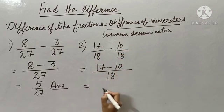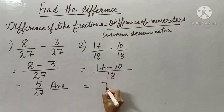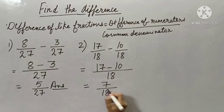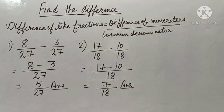Now 17 minus 10, 7 upon 18 is my answer. It is very easy beta to find the difference and to find the sum. I hope you understood, thank you.